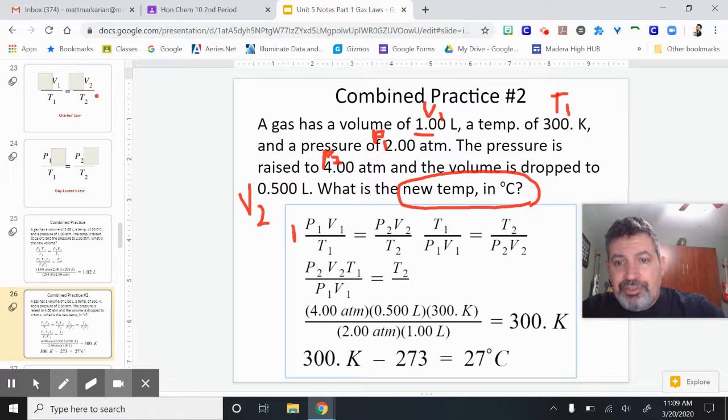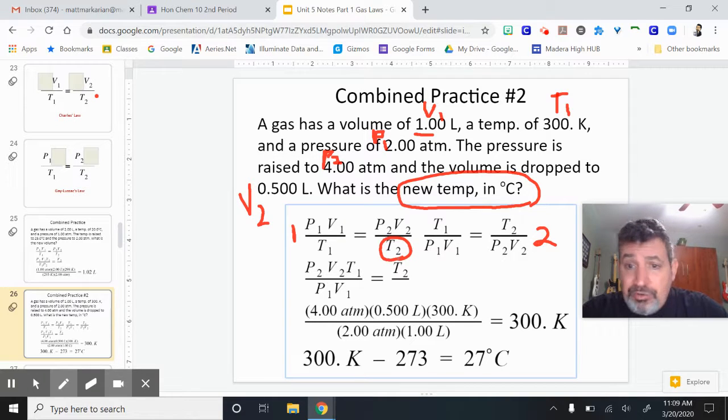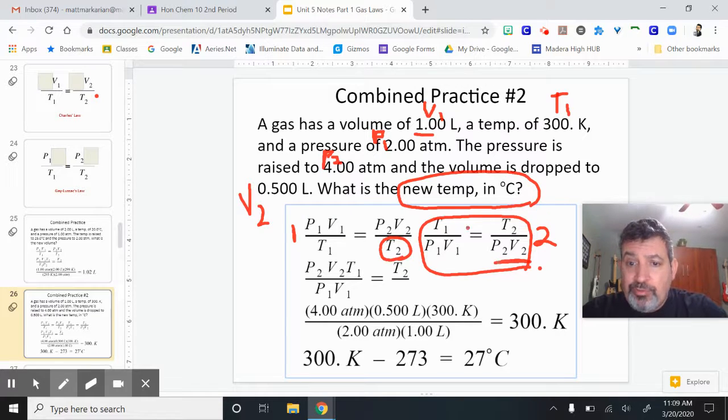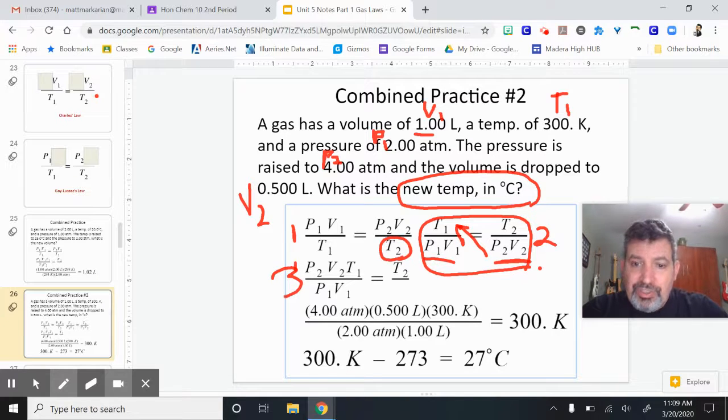So first, I start with my equation. Second, it's asking for something that's on the bottom - temperature. Temperature is always on the bottom. If you get a temperature question, what do we do first? You've got to flip it. So this is the flipped equation here. Once I do that, I've got to start doing my algebra. These two guys are on the bottom - move them up to the top. These guys can stay. And you get your T2 by itself, which is shown here in part three.